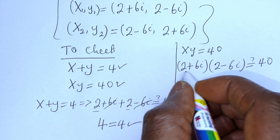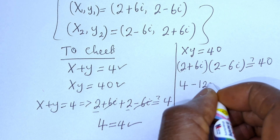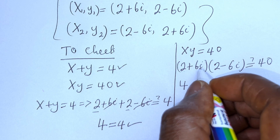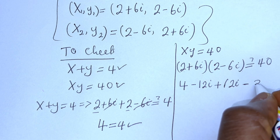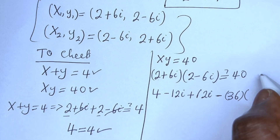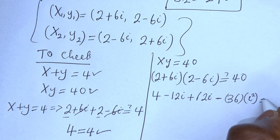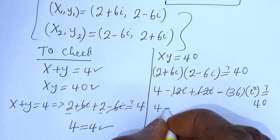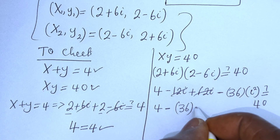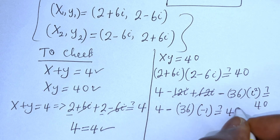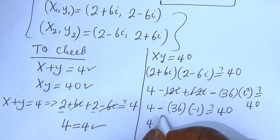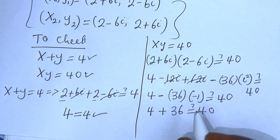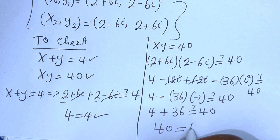Now let's check xy equals 40: (2 plus 6i) multiplied by (2 minus 6i) must equal 40. Expanding: 2 times 2 is 4, then 2 times minus 6i is minus 12i, then 6i times 2 is plus 12i, and 6i times minus 6i is minus 36 times i squared. The minus 12i and plus 12i cancel, giving 4 minus 36 times (minus 1), which is 4 plus 36, that is 40 equals 40 — which is true.